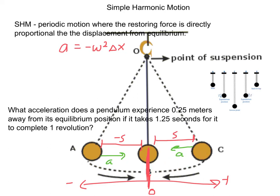Check out what the acceleration would be at the equilibrium mark. Delta x — how far away from equilibrium you are — is zero. Zero times anything is zero, so at the equilibrium mark you have zero acceleration. Acceleration is at the maximum when you're the furthest away — that's called the amplitude.